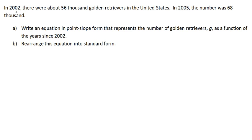Read the question. In 2002, there were about 56,000 golden retrievers in the United States. In 2005, the number was 68,000. Write an equation in point-slope form that represents the number of golden retrievers, g, as a function of the years since 2002.